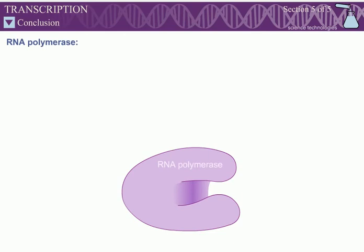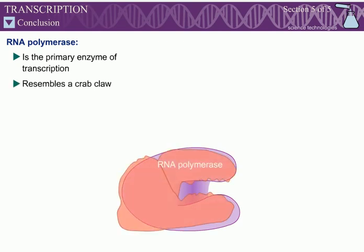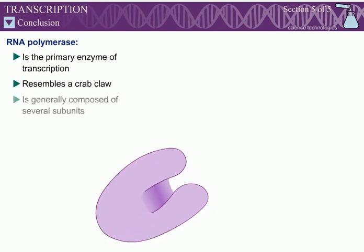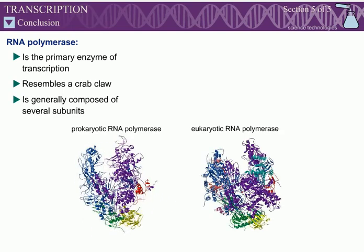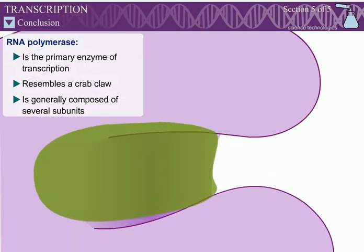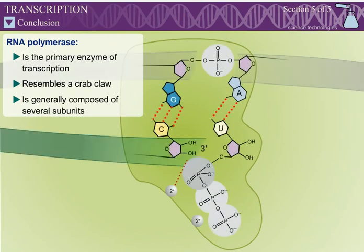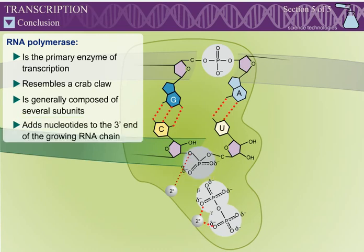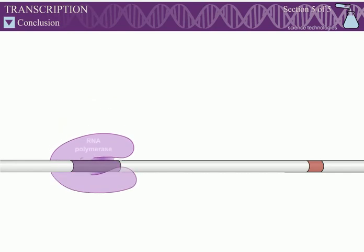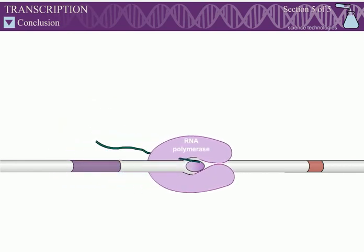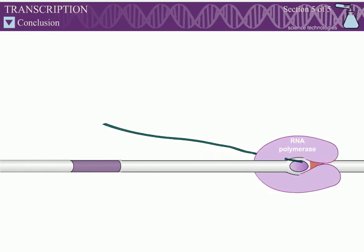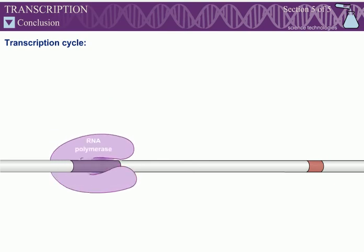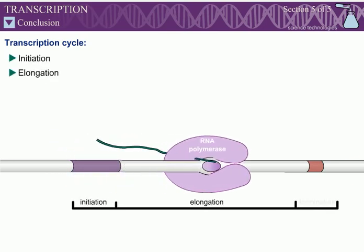The primary enzyme of transcription is RNA polymerase. Both prokaryotic and eukaryotic RNA polymerases resemble a crab claw. RNA polymerases are generally composed of several subunits. The active site of RNA polymerase contains two metal ions. Just as in DNA polymerization, these metal ions promote the addition of an incoming nucleotide to the 3' end of the growing RNA chain. The transcription cycle is divided into three phases: initiation, elongation, and termination.